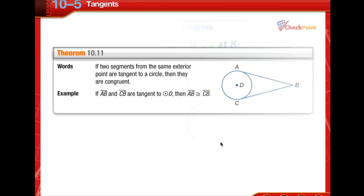Now, more than one line can be a tangent to the same circle. Theorem 10-11 says, if two segments from the same exterior point are tangent to a circle, then they are congruent.